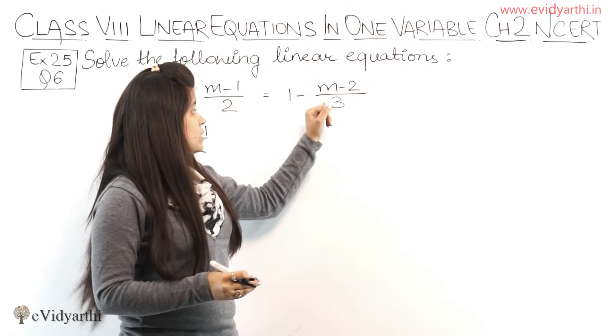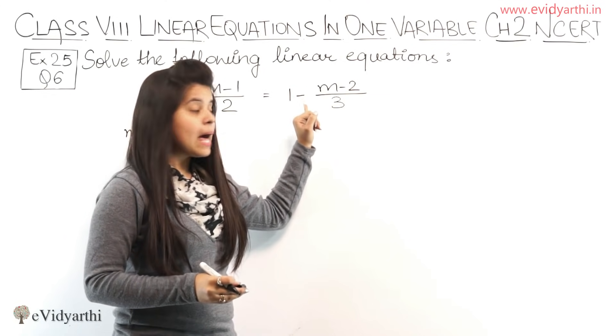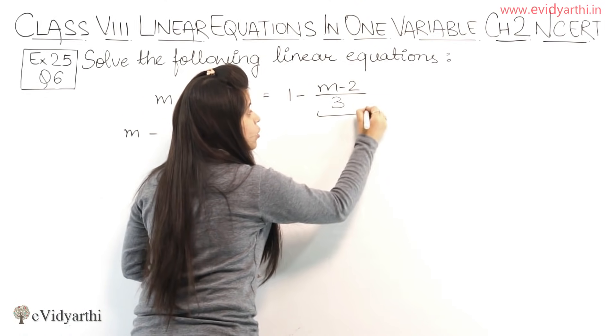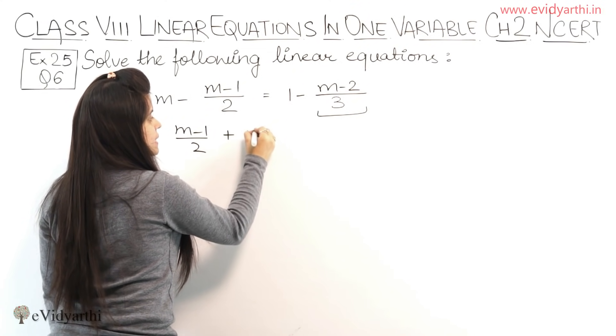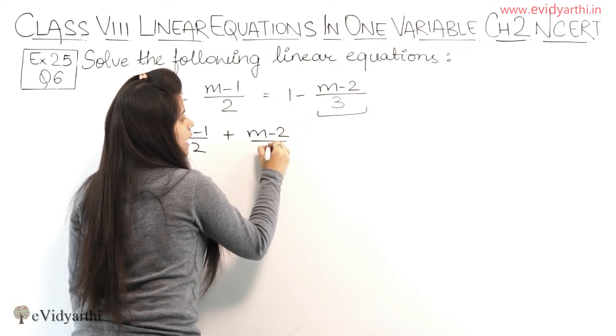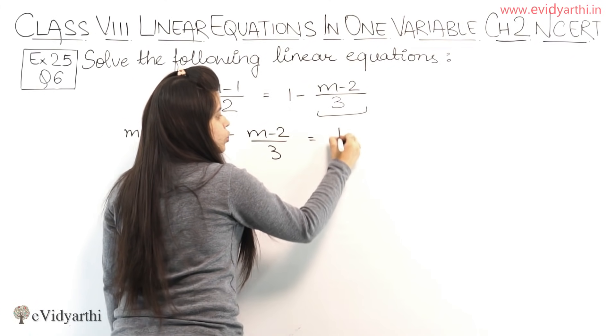See, this sign won't change, the one with the term, that is minus, because we're taking the whole term as one. So this is minus this, so here it will be plus (M-2)/3, and it will equal to 1.